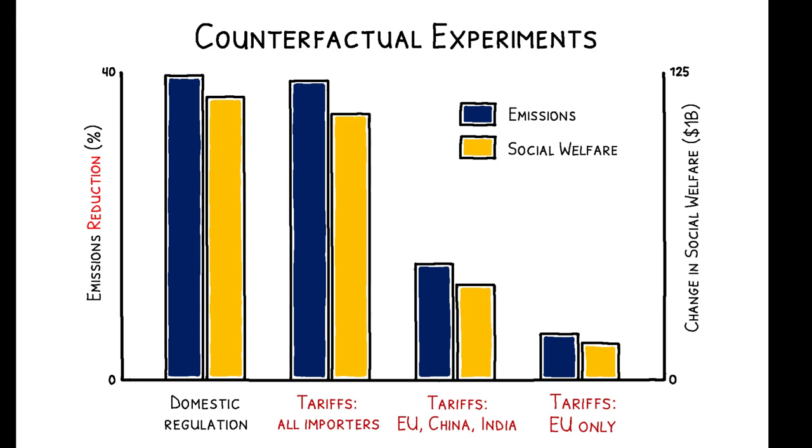As the size of the tariff coalition shrinks, so does its effectiveness. Lower coverage limits the impact of tariffs on world prices, and therefore, their impact on firm revenues, palm oil development, and emissions.